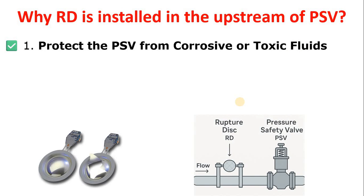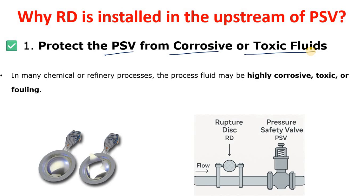The first reason we use a rupture disk upstream of a PSV is to protect the PSV from corrosive or toxic fluids. If you are handling a corrosive process fluid — such as hydrogen sulfide, hydrochloric acid, ethyl dichloride, or amine — and you are not using a rupture disk, the process fluid will directly contact the PSV's internal parts, including the seat and disk.